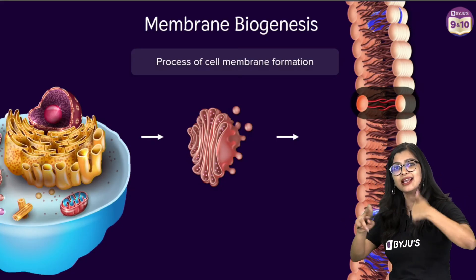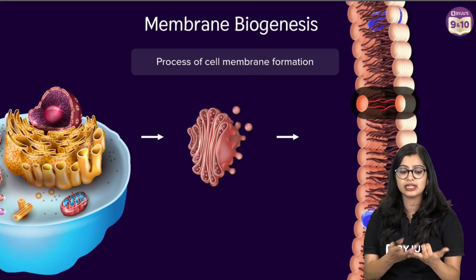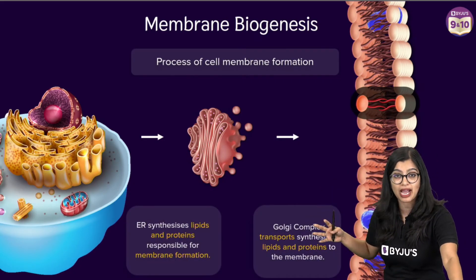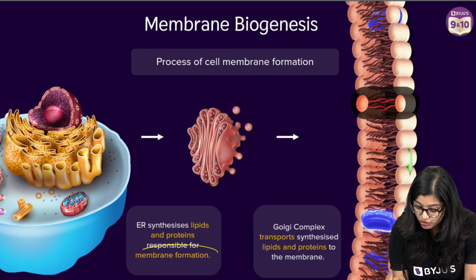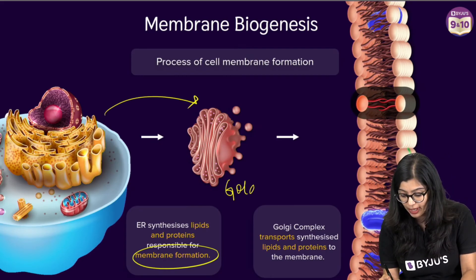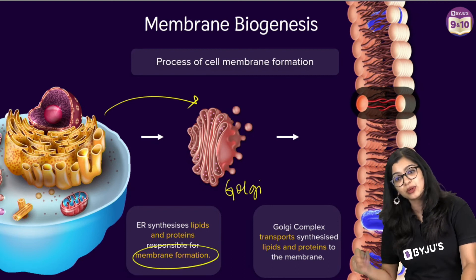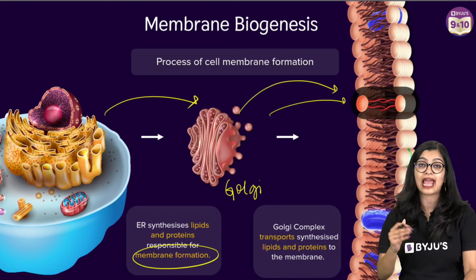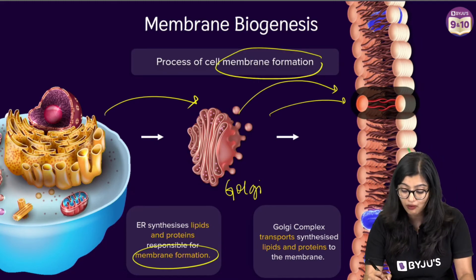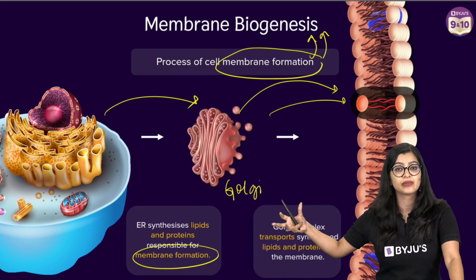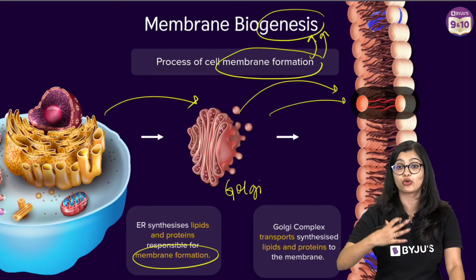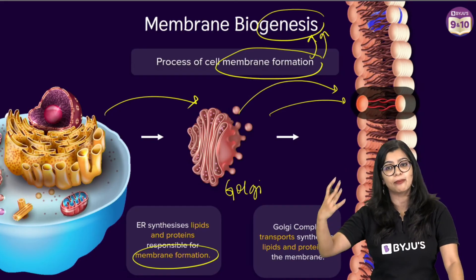Let's revise and think about what the ER produces: ER produces protein, ER produces lipid. The lipids and proteins synthesized by the ER are necessary for the formation of the membrane. They are transported to another cell organelle — the Golgi complex or Golgi apparatus — which then acts as a postman and transports them to help in the formation of the cell membrane. This formation of membrane is what we call membrane biogenesis. Membrane is an outer covering, bio means living, genesis means to generate or to form — so the ER helps with formation of the membrane.